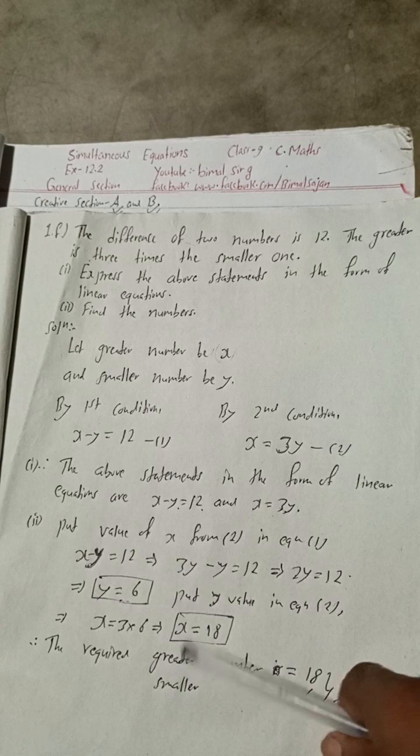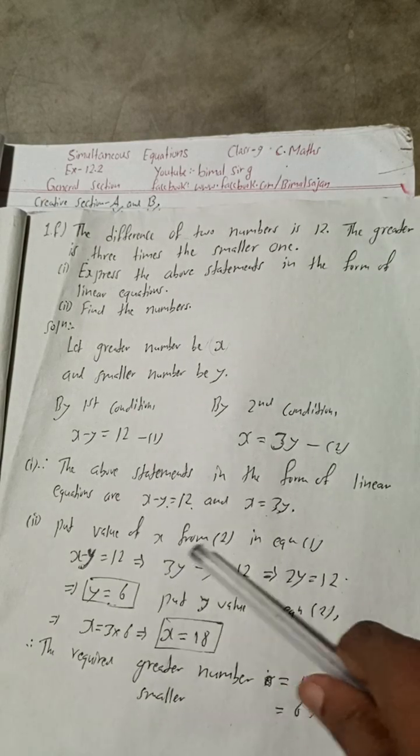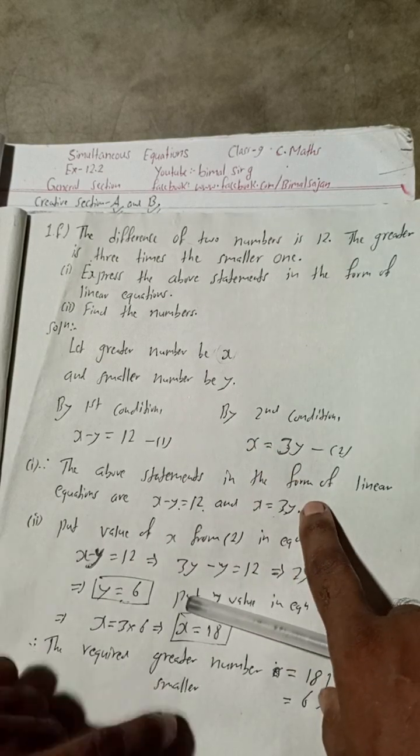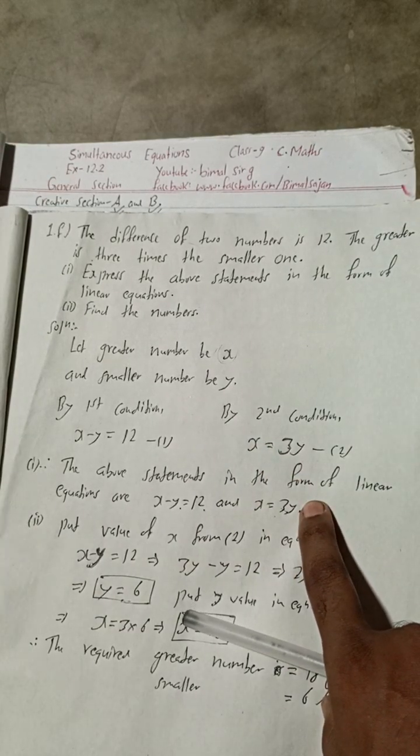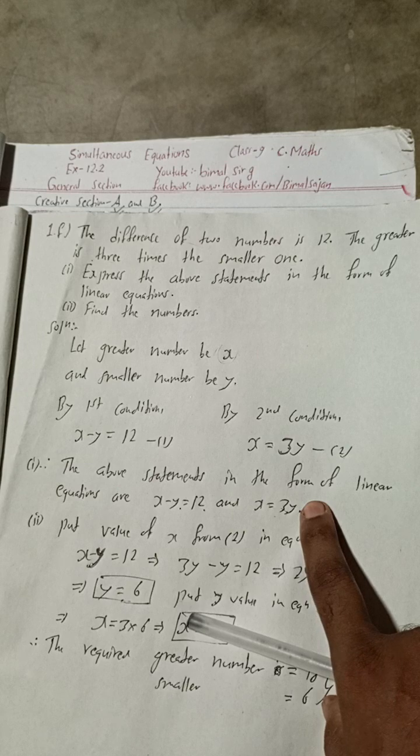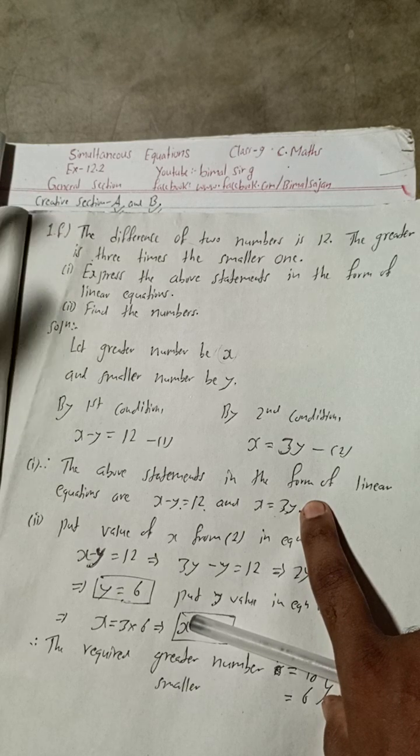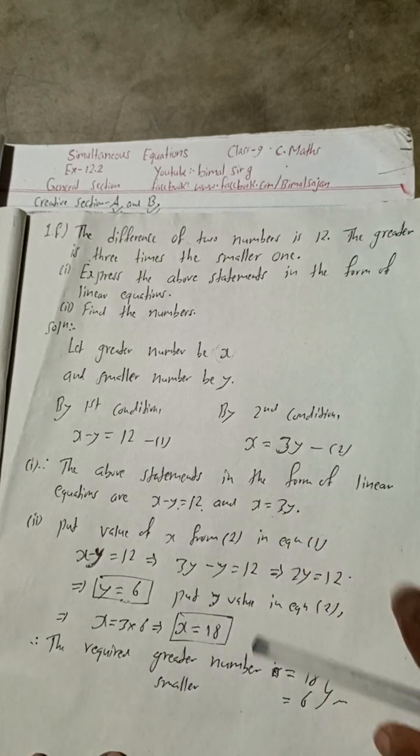Next is the last one, 1G. After that, all the exercises of 12.2 will be completed, because I have already uploaded creative section A and creative section B. You can check the playlist of Bimalsarji, this is my YouTube channel.